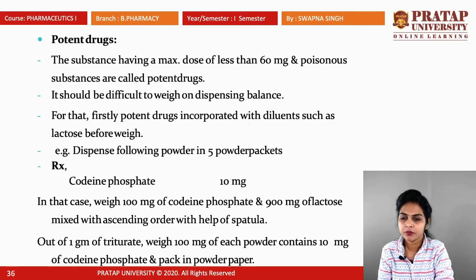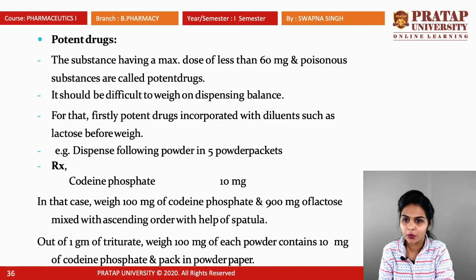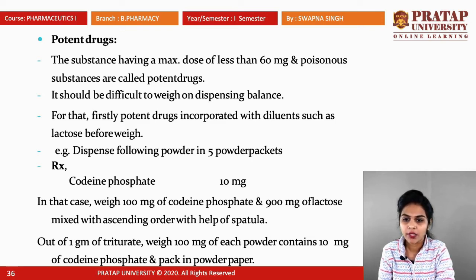Potent drugs are substances having a maximum dose of less than 60 mg, including poisonous substances. They are difficult to weigh on a dispensing balance. For such drugs, the potent drug is first incorporated with a diluent such as lactose, then dispensed as powder packets. For example, codeine phosphate at 10 mg: weigh 100 mg of codeine phosphate and 900 mg of lactose, mix in ascending order with a spatula. Out of one gram of triturate, 100 mg of each powder contains 10 mg of codeine phosphate, and pack in powder paper.